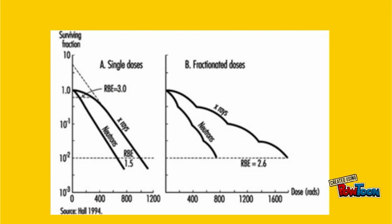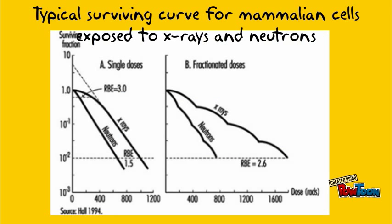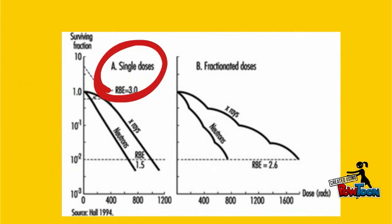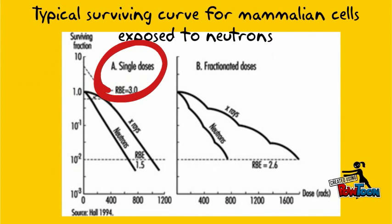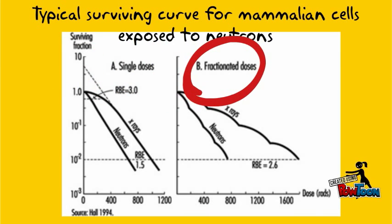This is a typical survival curve for mammalian cells exposed to X-rays and fast neutrons. The X-axis shows dose, and the Y-axis shows the surviving fraction. Graph A represents single dose, while graph B represents fractionated dose.